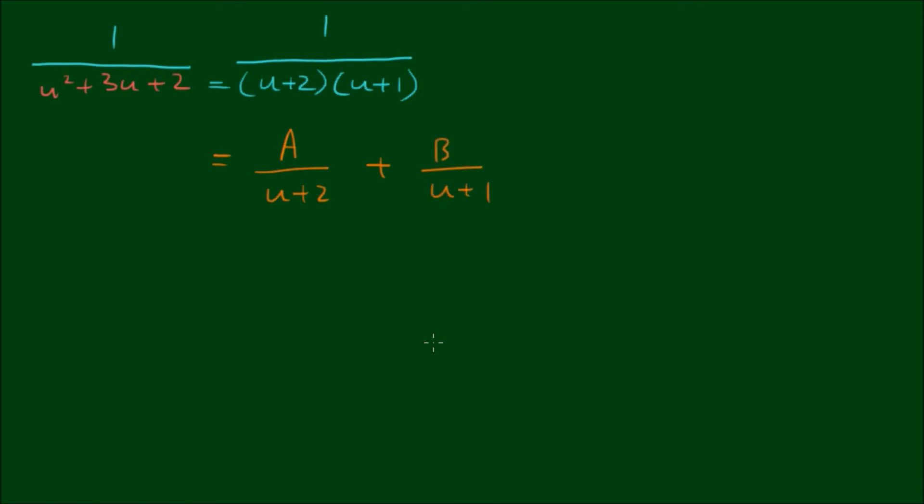And to work out the coefficients A and B, I can use a shortcut called the cover-up rule. So I'll copy the fraction 1 on u plus 1 by u plus 2. Alright, so to get the coefficient A, we simply let u equals minus 2 and cover up the term u plus 2.